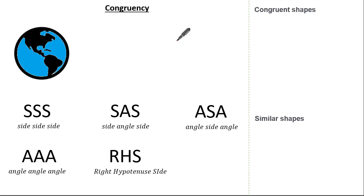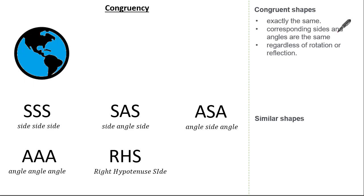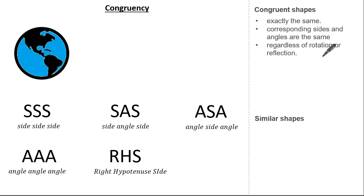Hi everyone and welcome to this tutorial looking at congruency and a little bit of similarity in triangles. Before I start, what does congruency mean? Well, congruent shapes are shapes which are exactly the same. The corresponding sides and angles are the same regardless of rotation, reflection, or orientation.